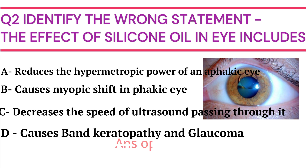Silicone oil has a higher refractive index than the crystalline lens and causes the posterior surface of the lens to become more divergent. As a result, a hypermetropic shift occurs. In an aphacic eye, silicone oil acts as a converging interface and causes a myopic shift. Hence, hypermetropia caused by aphakia is reduced by silicone oil. Silicone oil also reduces the speed of ultrasound and will give erroneously longer readings in axial length.